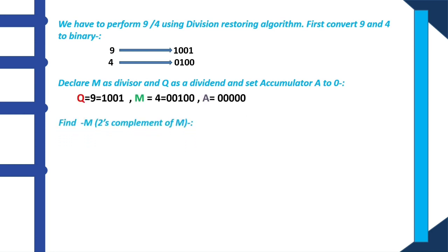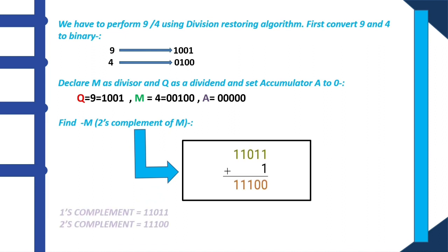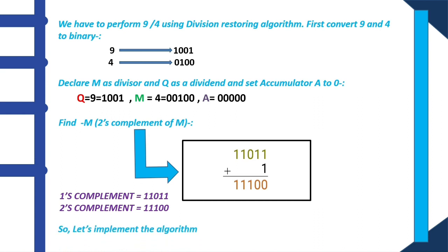Next step is finding the two's complement of M, that is minus M. For that, we will first find the one's complement and add 1 to the one's complement to find the two's complement. Let's implement the algorithm.